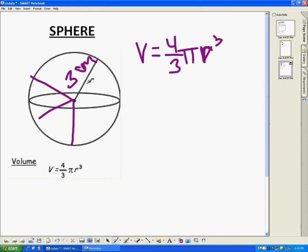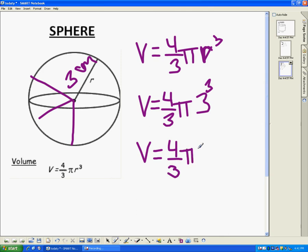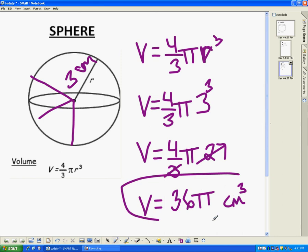So when I plug this into my formula, I end up with 4 thirds pi, my radius, which is 3 cubed. So it's going to be 4 thirds of pi, and the radius is 3 times 3 times 3, which is 27. Now, when you get to this point, you can either multiply 27 by 4, or if you see a relationship between the 27 and the 3, I would go ahead and divide it just because it makes it easier to do the math in your head. So 27 divided by 3 is 9. 9 times 4 is 36. So the answer is 36 pi, and because we're talking about centimeters, it's going to be cubic centimeters. And that's the volume of this sphere.